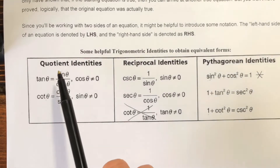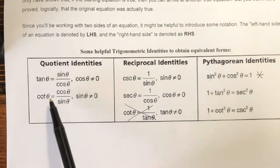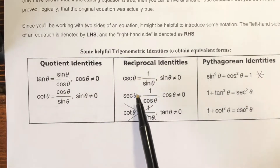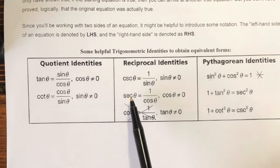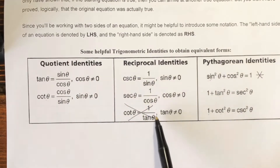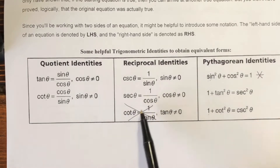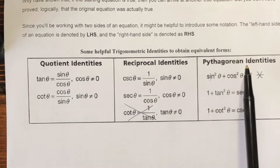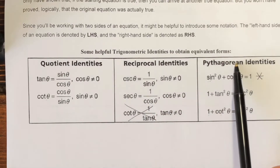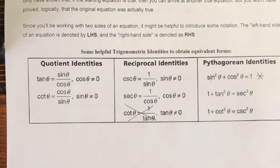So these are the tangent and cotangent ones. And then we have cosecant and secant. I don't like this version of cotangent, so I would just cross this one out. And then these are the Pythagorean identities. So you'll want to write those down and have them. Pause the video if you haven't yet and write those down.